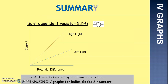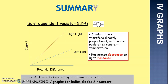A light dependent resistor, or LDR — again, when we keep the light constant, it acts as an Ohmic resistor. As the light increases, the resistance decreases. So the higher the light, the lower the resistance.